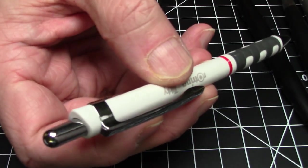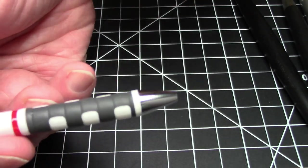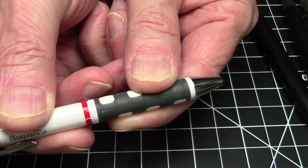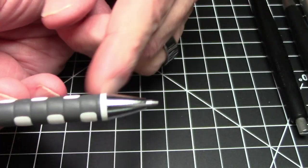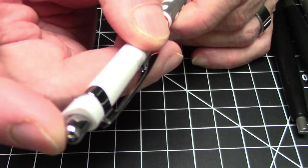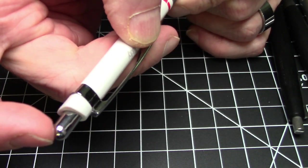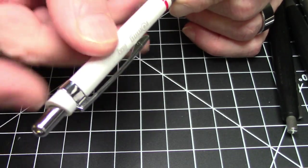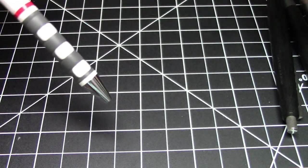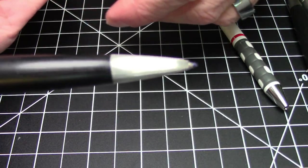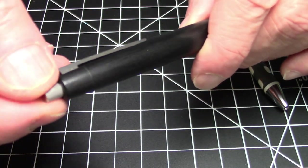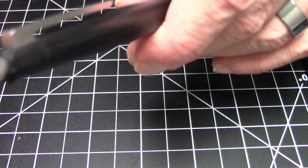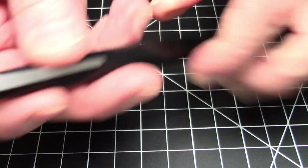This pen here is a Rotring Tikky. This has two springs so you can see when you push it to extend it works just like anything else but when the pen is extended there's still spring action here because there's a second spring up here that drives the button. Whereas on the Lamy ballpoint again when you extend it there is no spring action here. This is just kind of floppy.